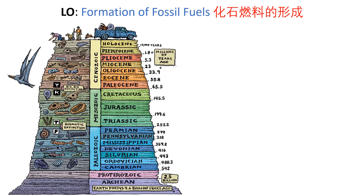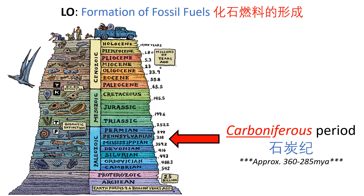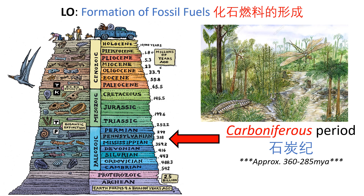Fossil fuels form over millions of years. In fact, most of the fossil fuels that we use today were formed 300 million years ago in the Carboniferous Period. This was a period in Earth's history when the world was dominated by large insects, and it was covered in lots of swamps and vegetation like trees and other plants. Because fossil fuels take such a long time to form, there is a very limited supply on our Earth today, and for this reason, fossil fuels can be considered a non-renewable energy source.